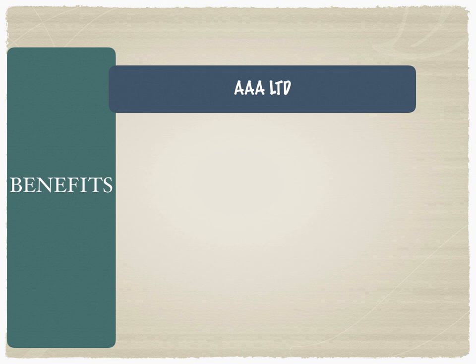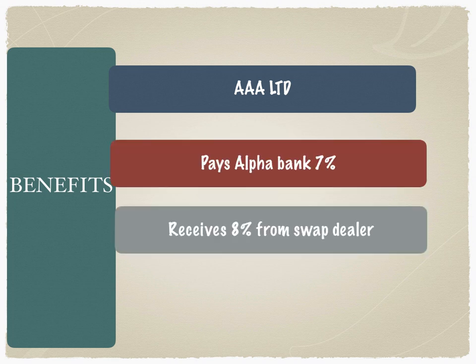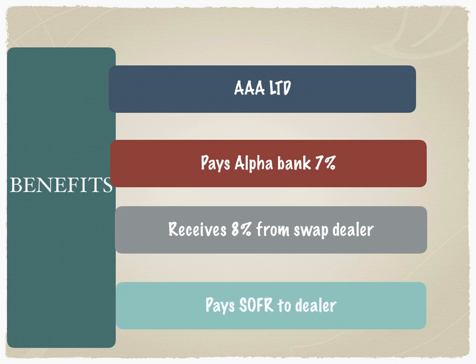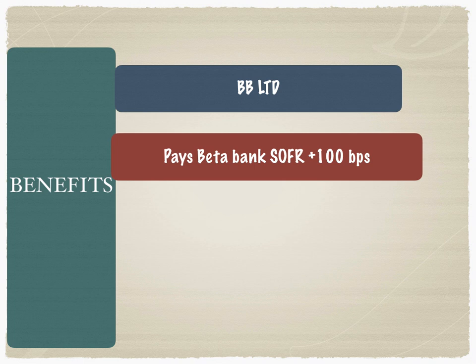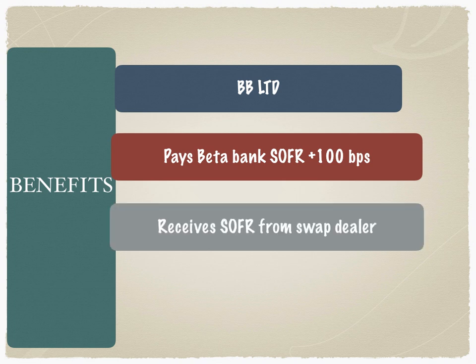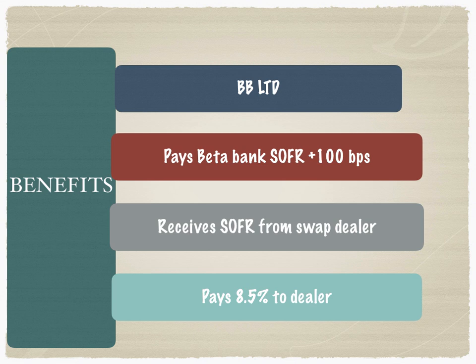What are the benefits of the swap? For AAA Limited: it pays Alpha Bank 7%, receives 8% from the swap dealer, and pays SOFR to the dealer. It is receiving more than it is paying, giving it a clear 100 basis points benefit. For BB Limited: it pays Beta Bank SOFR plus 100 basis points, receives SOFR from the swap dealer, and pays 8.5% to the dealer. If it had taken a fixed loan from Beta Bank it would pay 10%, so there is roughly a 150 basis points difference, with 100 basis points offset and 50 basis points in net benefit to BB Limited.